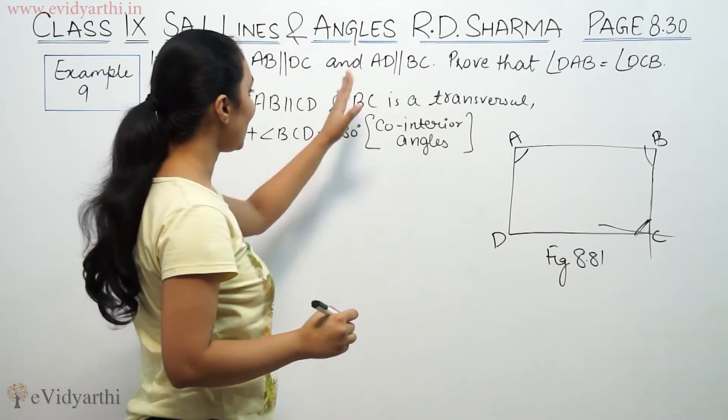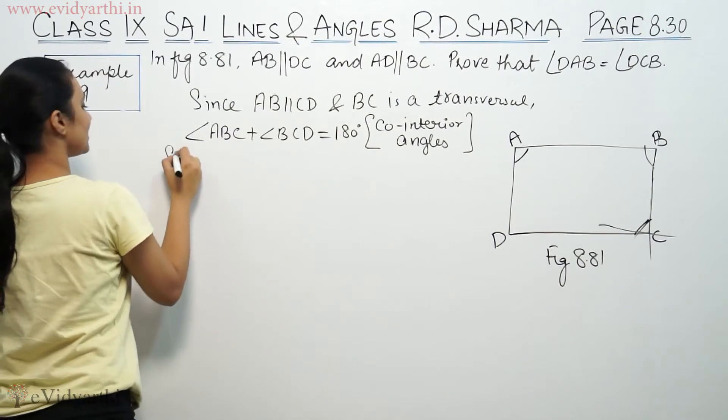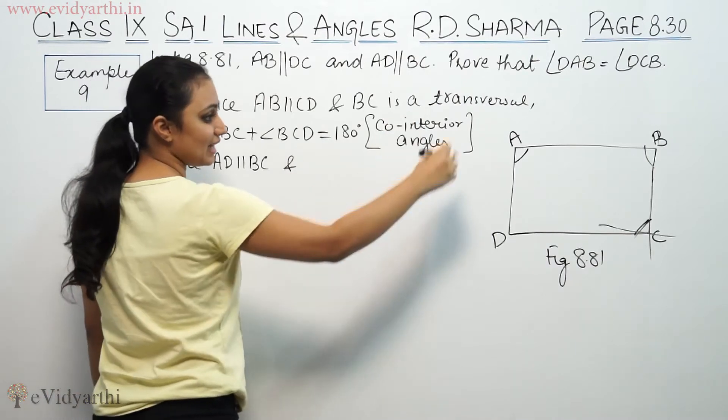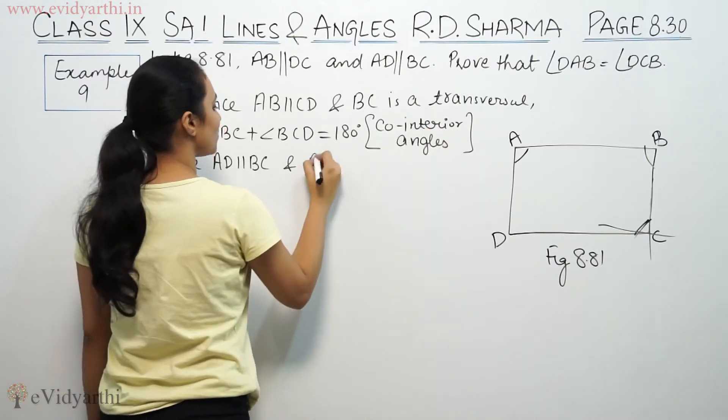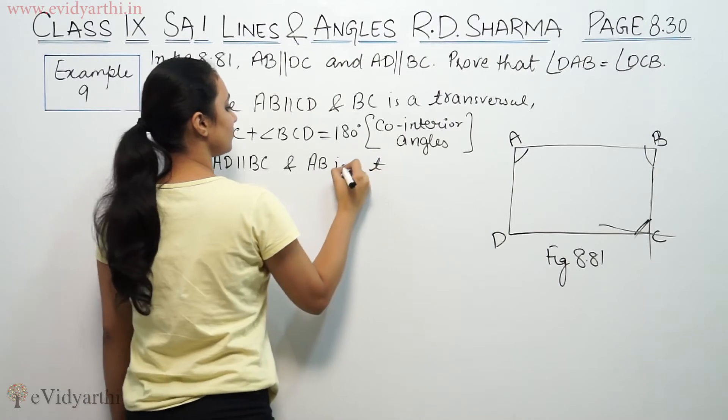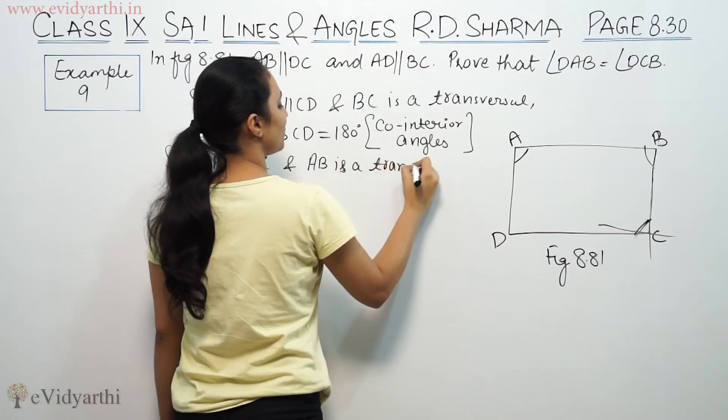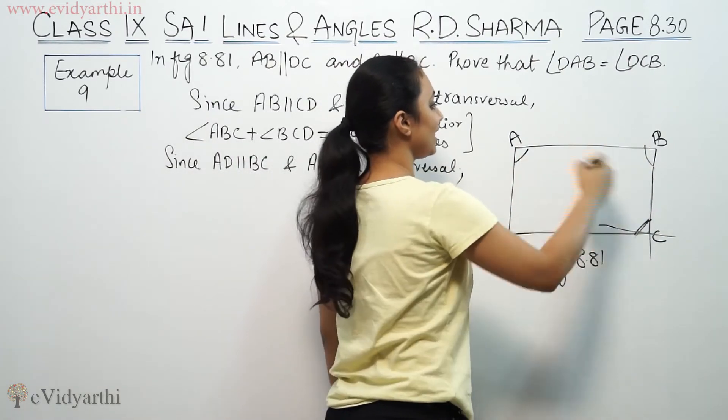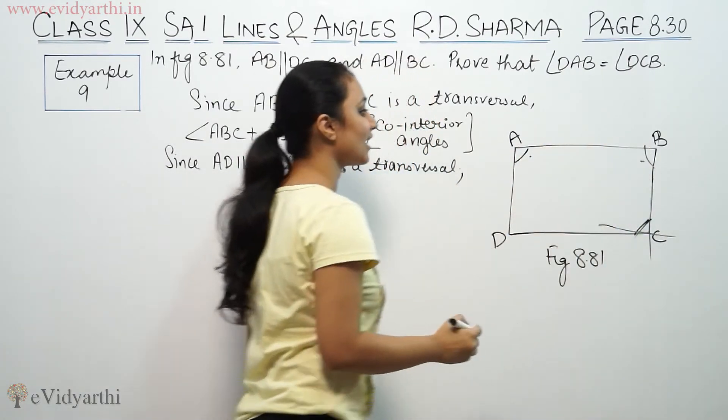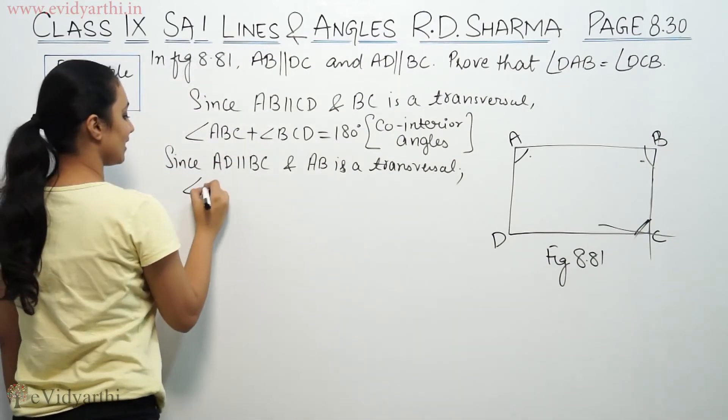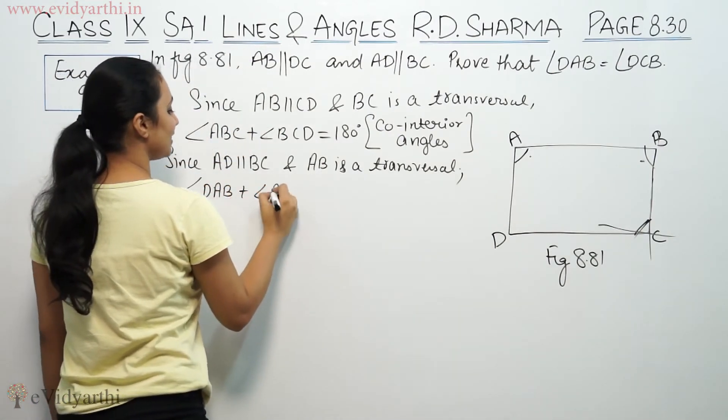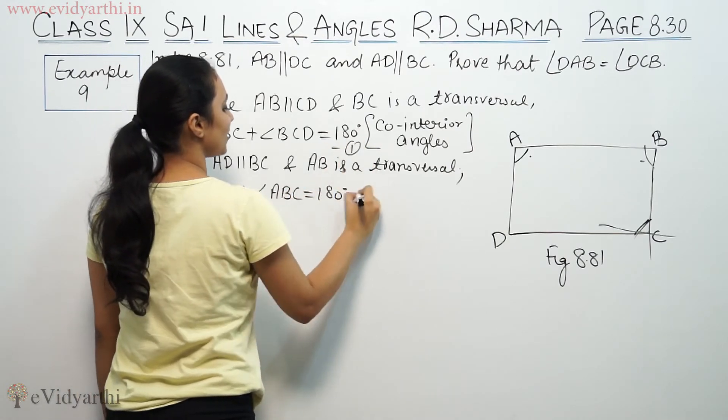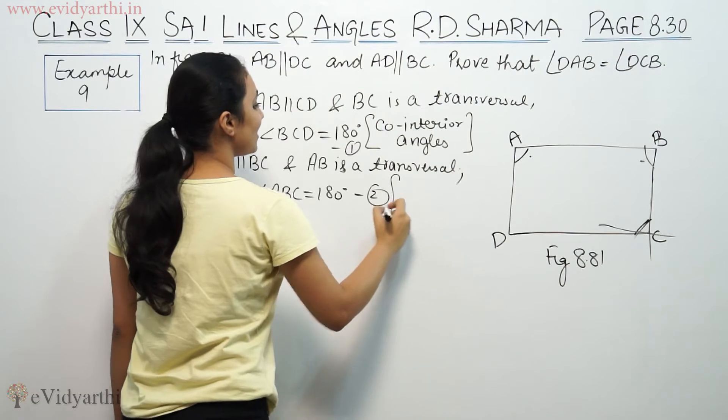Then, from here, AD is parallel to BC. Since AD is parallel to BC, AB is a transversal. So this angle plus this angle is 180. Angle DAB plus angle ABC equals 180 degrees. This is your first equation, the second one, co-interior angles.